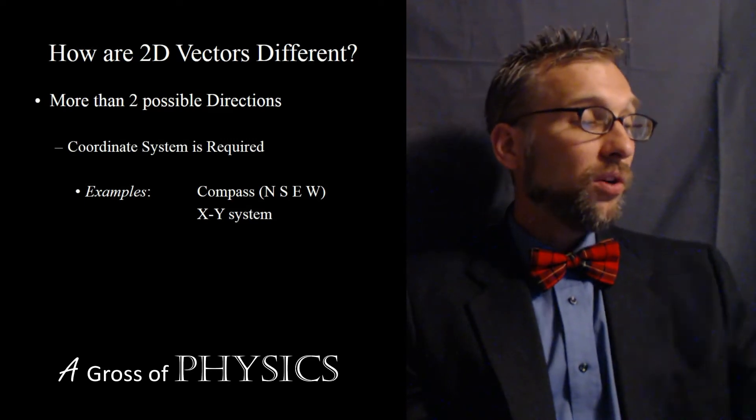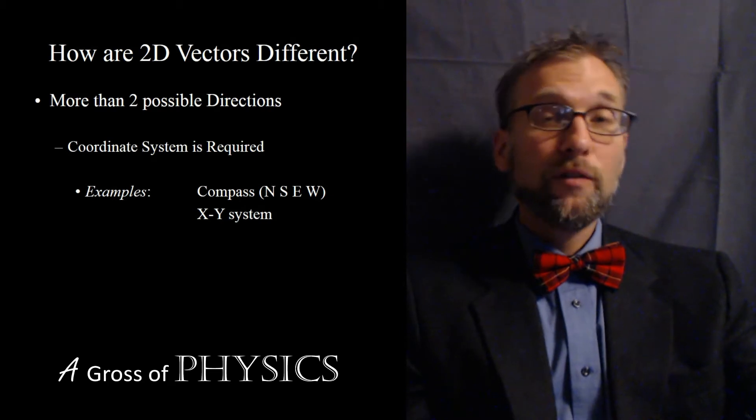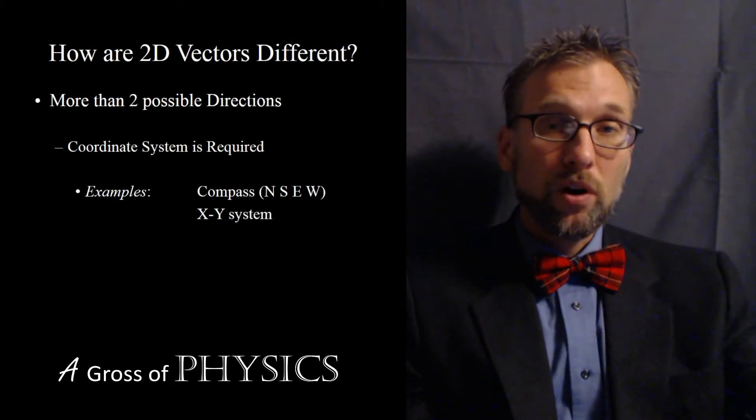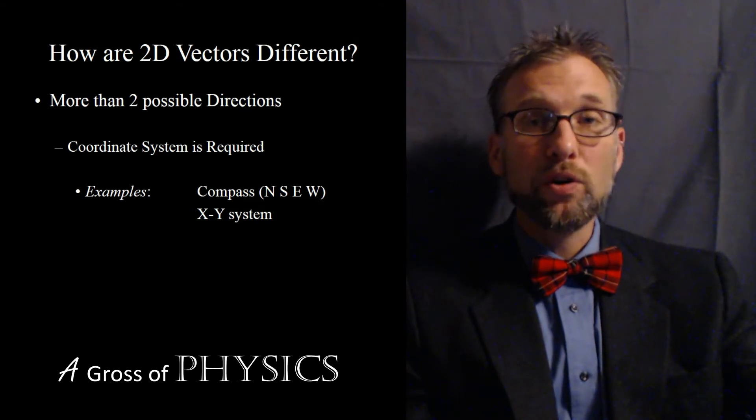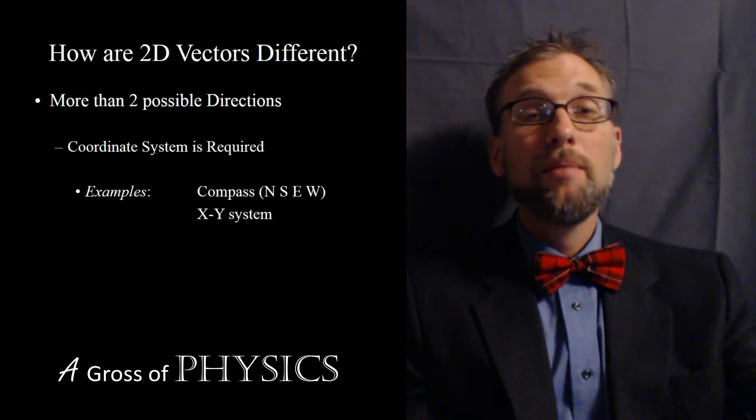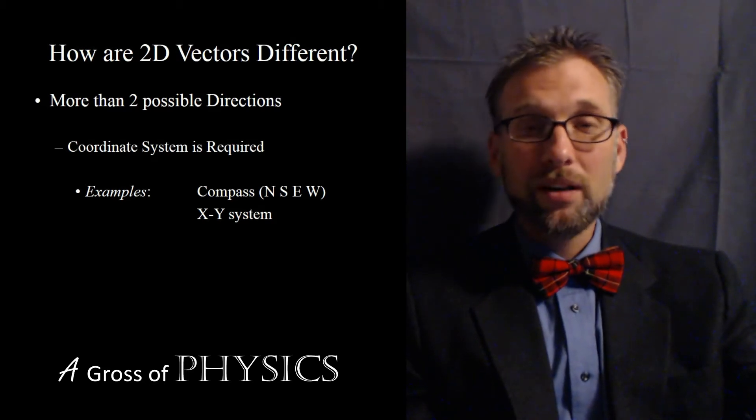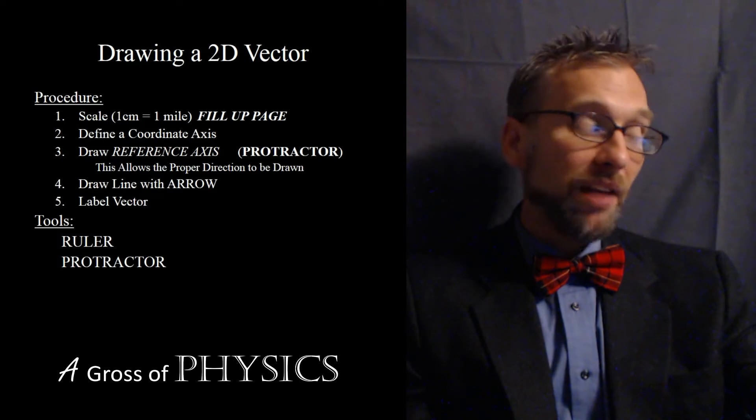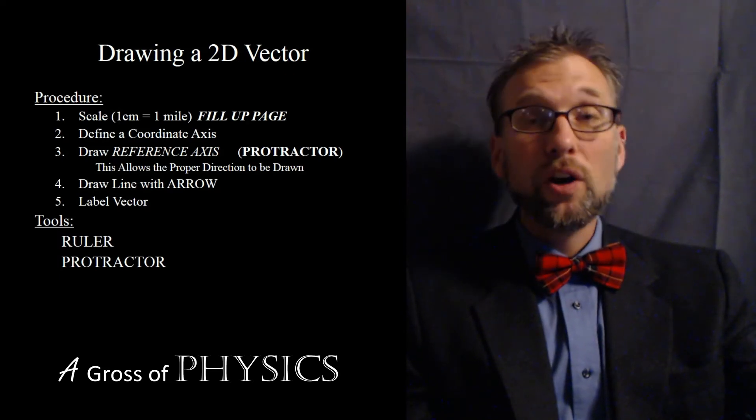Two-dimensional vectors will require a few extra steps in order to draw them. You'll be able to represent a vector that points in any direction from zero to 360 degrees on an XY coordinate system or that points in any direction on a map. Now, what we're going to do is add a few more steps to our procedure. First thing you'll want to do is name your vector. Typically, problems will have vectors named for you, maybe vector A and B, maybe vector V1 and V2. Then you're going to have to set up a scale.